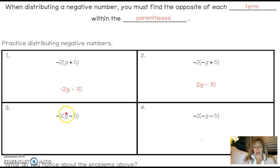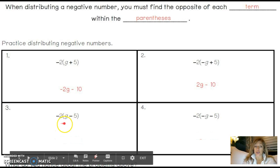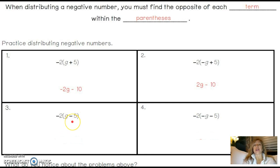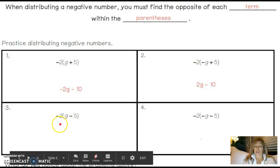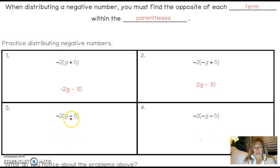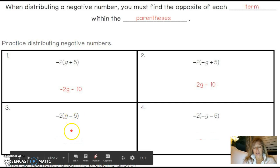Number 3: I have positive G, which means negative 2 times positive G gives me negative 2G. Negative 2 times negative 5 — this is treated as negative 5 — negative 2 times negative 5 is positive 10. Another way to look at it: 2 times G is 2G and the opposite of positive G is negative, so it's negative 2G. 2 times 5 is 10, the opposite of a negative is a positive, so we get negative 2G plus 10.